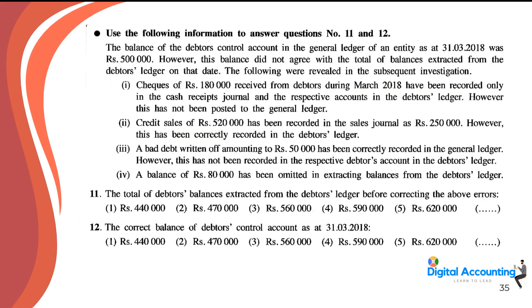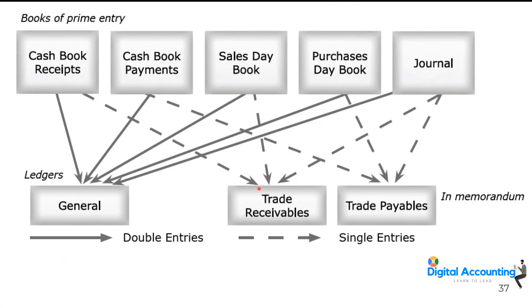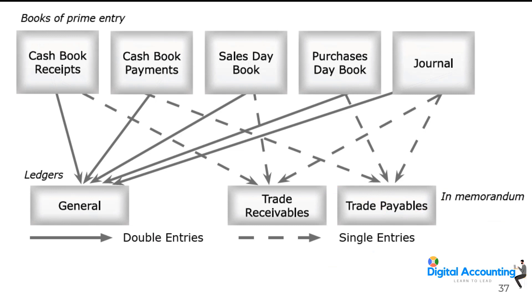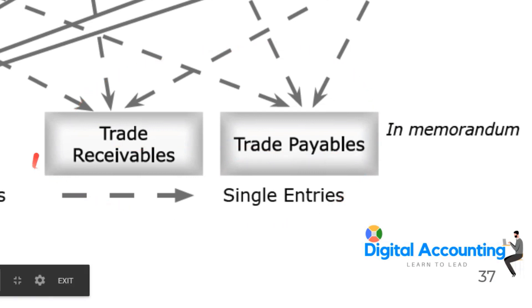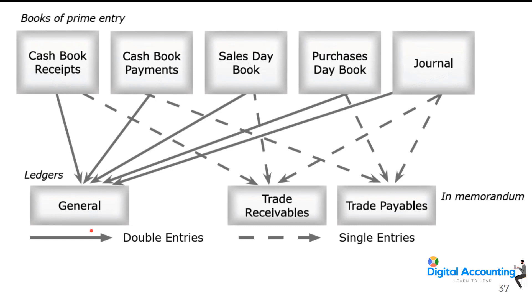Moving to the next question on control account reconciliation. The theory: receivables and payables ledgers are subsidiary accounts — they are single-entry systems used as memorandum records. Control accounts, by contrast, use the double-entry system. Only the control account balances go to the statement of financial position as trade receivables or trade payables, not the individual subsidiary ledger balances.